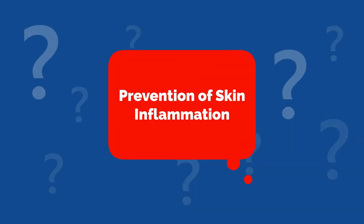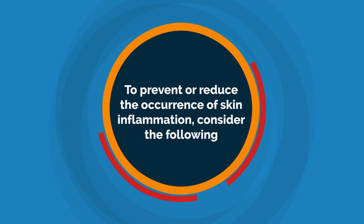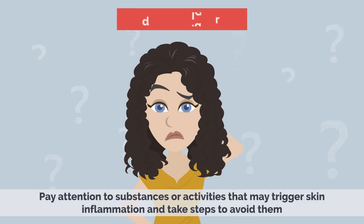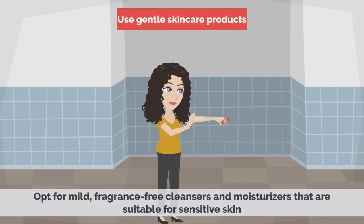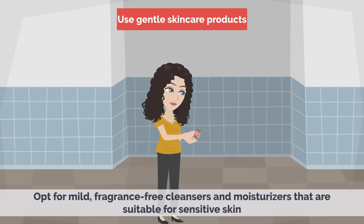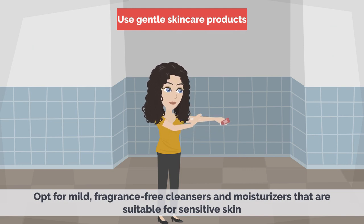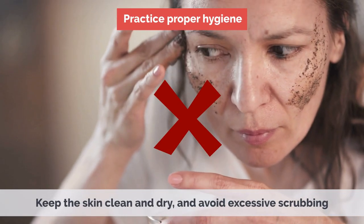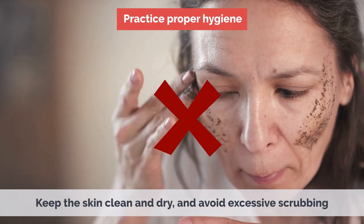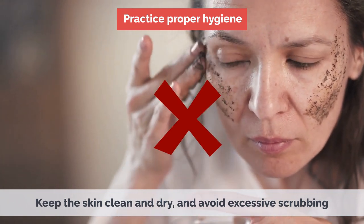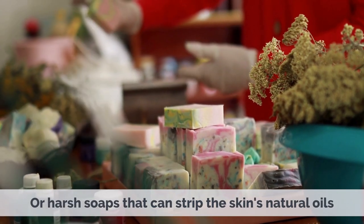Prevention of Skin Inflammation. To prevent or reduce the occurrence of skin inflammation, consider the following: Identify Triggers – Pay attention to substances or activities that may trigger skin inflammation and take steps to avoid them. Use gentle skin care products – opt for mild, fragrance-free cleansers and moisturizers that are suitable for sensitive skin. Practice Proper Hygiene – Keep the skin clean and dry, and avoid excessive scrubbing or harsh soaps that can strip the skin's natural oils.